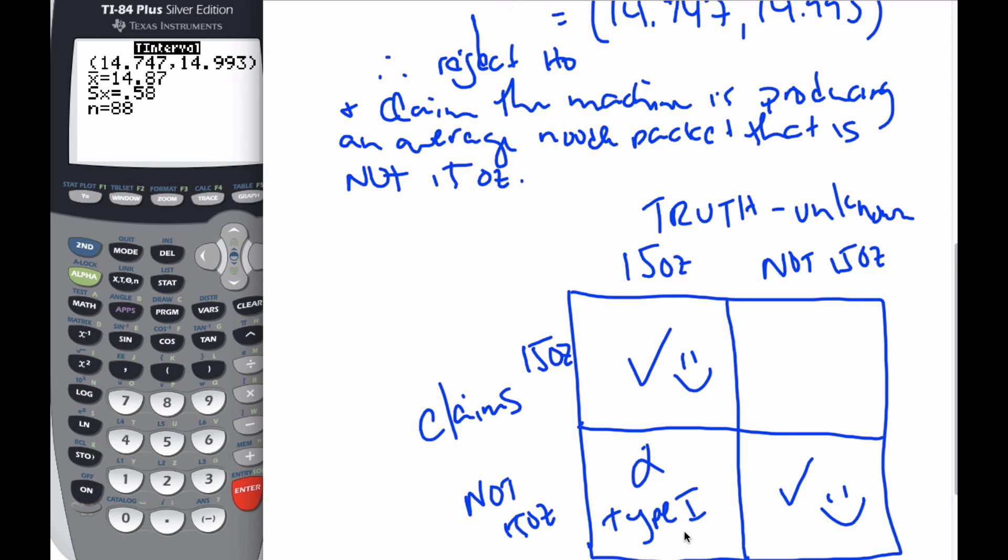The other one is called a type 2 error, and we call that beta. That happens if we claim it's true but it's not. In terms of Mr. Noodleman, if we claim the machine is working correctly and it's not, if it's a type 2 error, then he could be sued for false advertising. He's selling packages that are not 15 ounces.